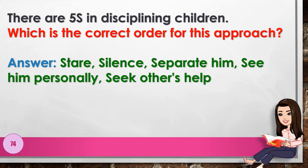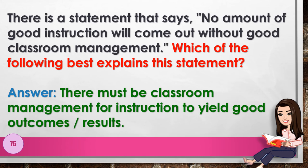Number 74: There are five S's in disciplining children. Which is the correct order for this approach? Answer: stare, silence, separate him, see him personally, seek others' help. Number 75: There is a statement that says no amount of good instruction will come out without good classroom management. Which of the following best explains this statement? Answer: there must be classroom management for instruction to yield good outcomes or results.